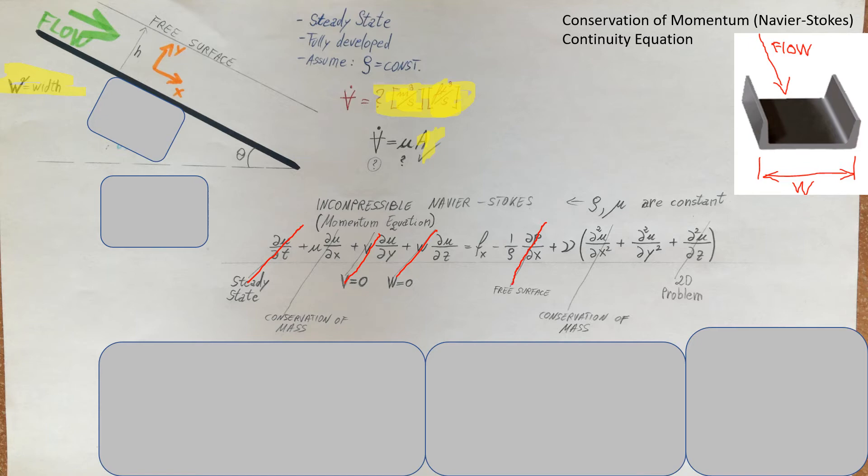Now, next, let's see right here, this term. We are dealing with a one dimensional flow, right? And we are analyzing it in two dimensions, X and Y dimension. Therefore, this is a 2D problem. We do not need to worry about a Z. So, cross this guy out.